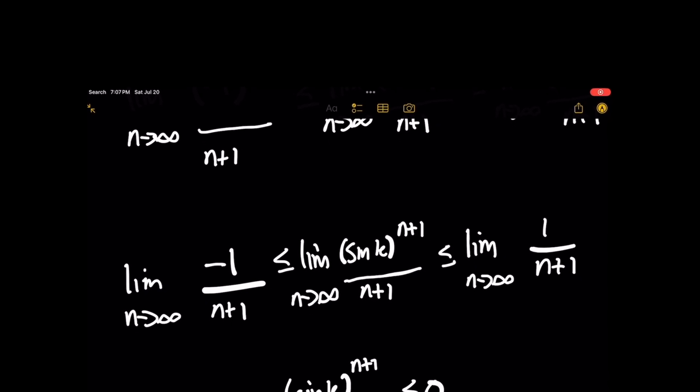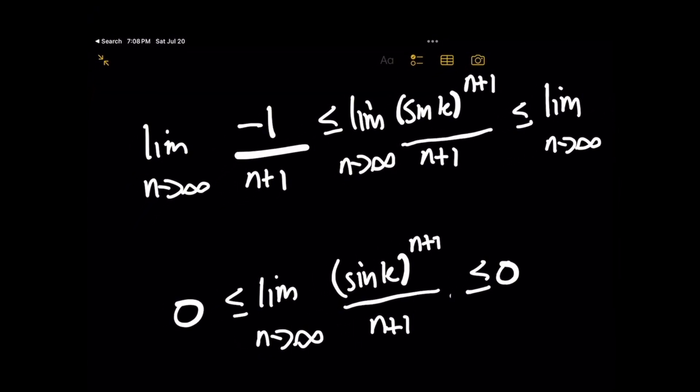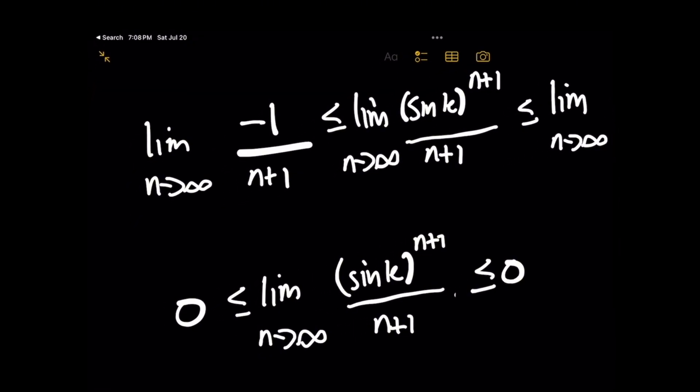The expression will converge to 0. With the squeeze theorem, the lower bound is a convergent value of 0, just like the upper bound. If our limit expression is converging between 0 and 0, the answer is going to be 0.